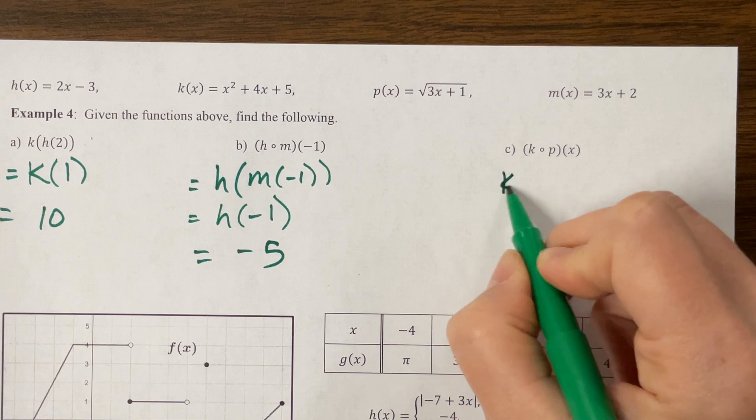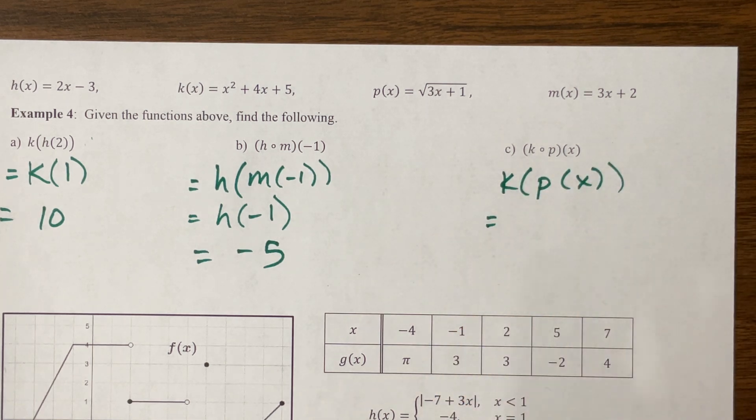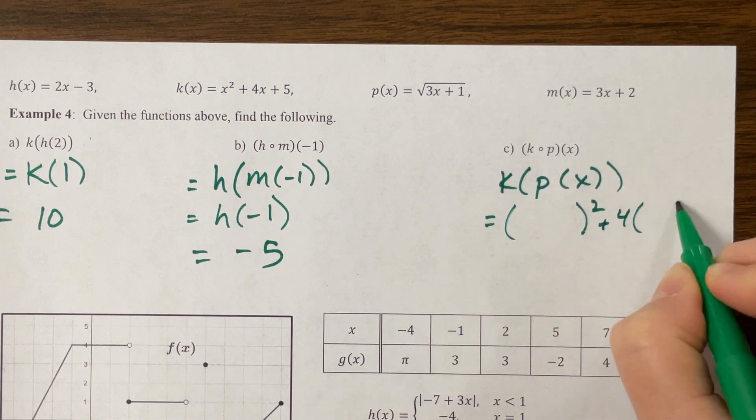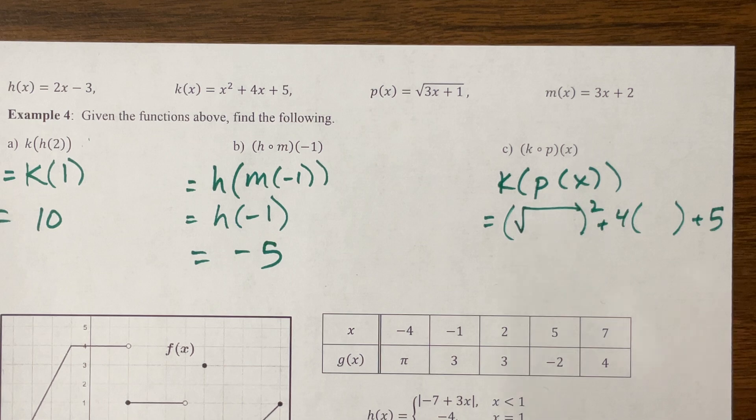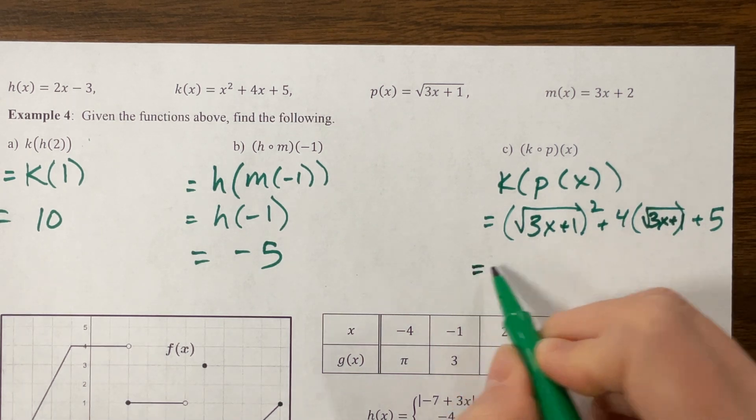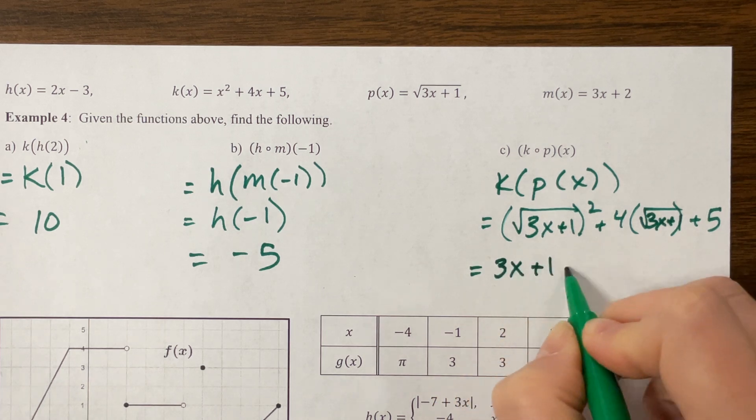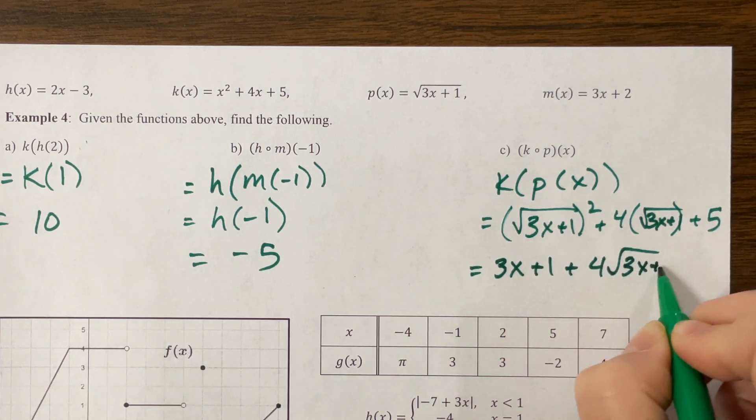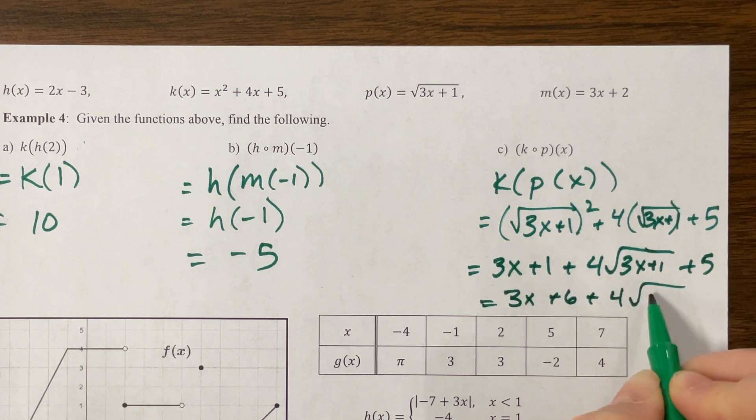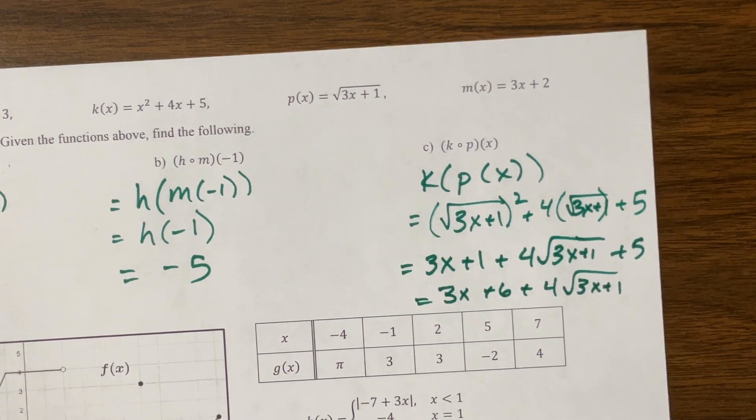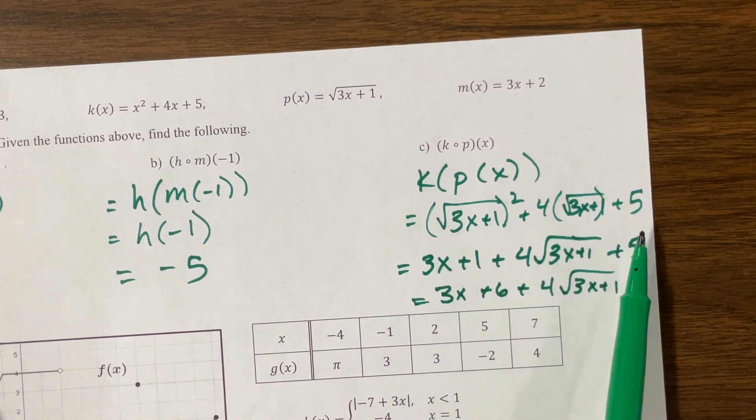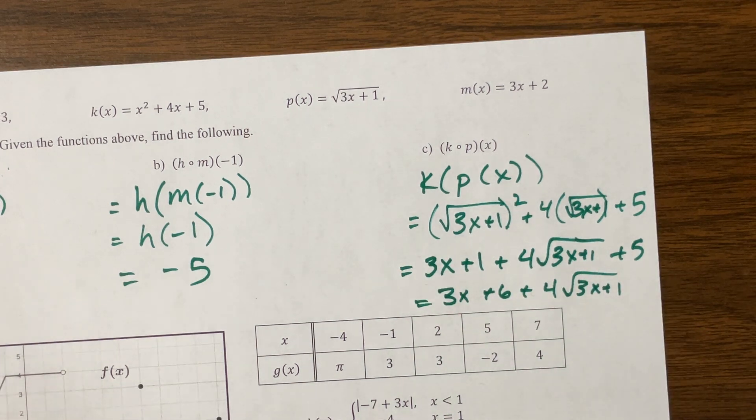And then we see k of p of x. So p, 3x plus 1 plus 4 times the square root of 3x plus 1 plus 5. I see like terms here. So I would just simplify this to 3x + 6 + 4 times the square root of 3x + 1. We took the function p and plugged it into k. We had something squared plus 4 times something plus 5. We squared that. The square root and the square root cancel out. And there we go.